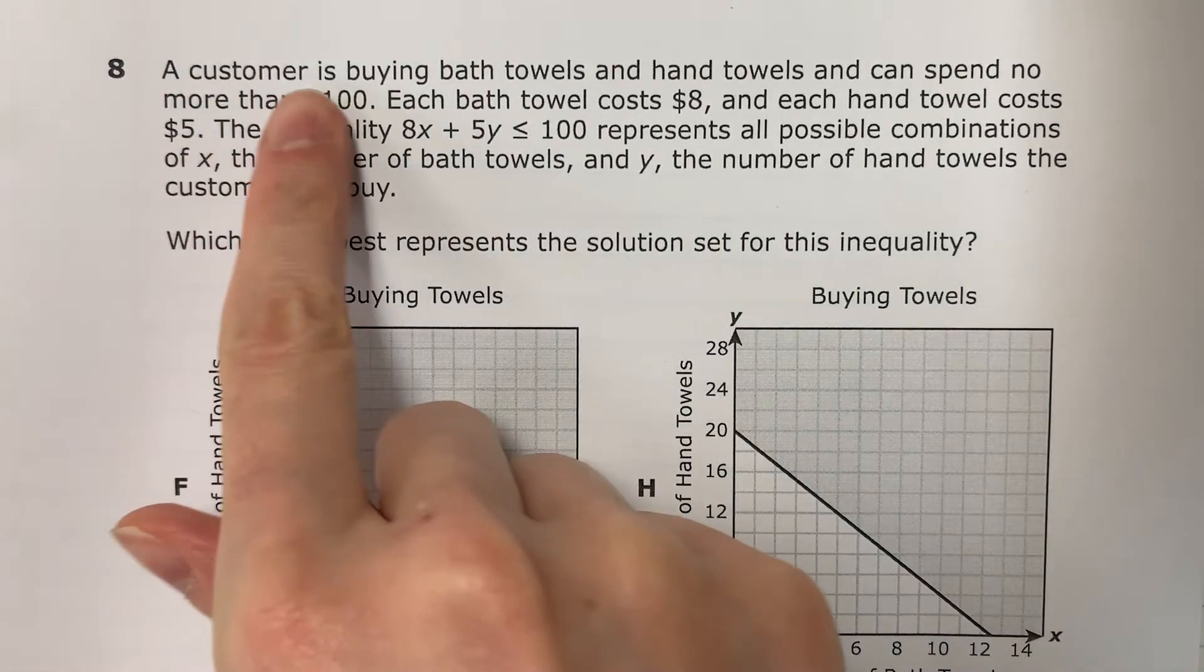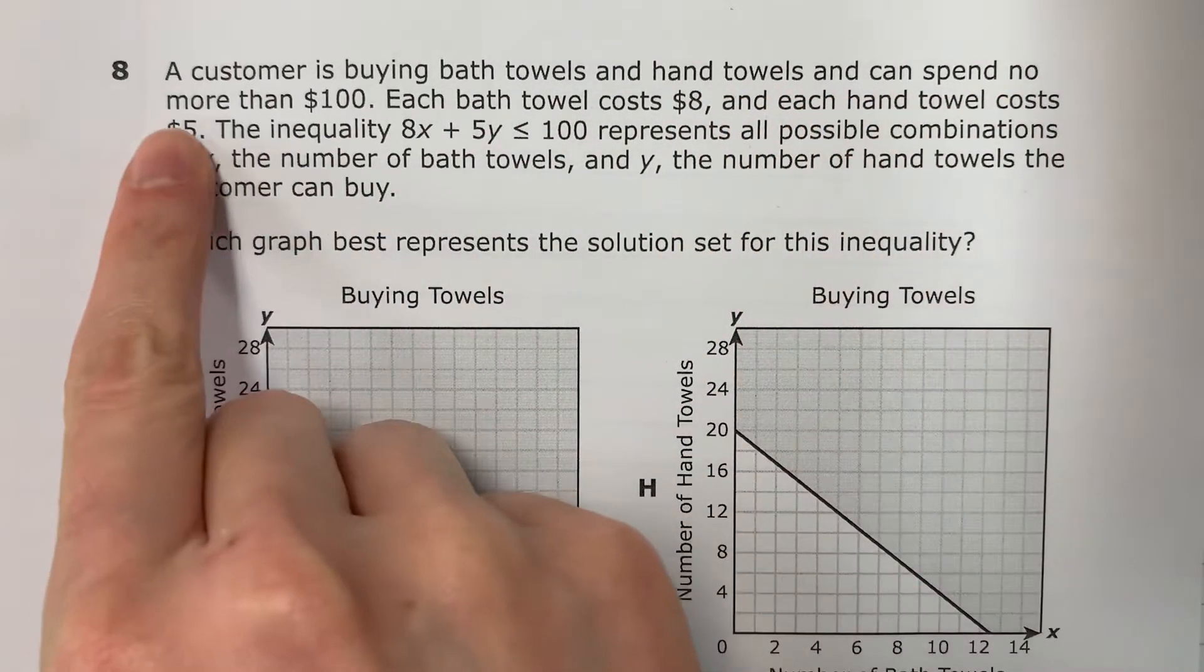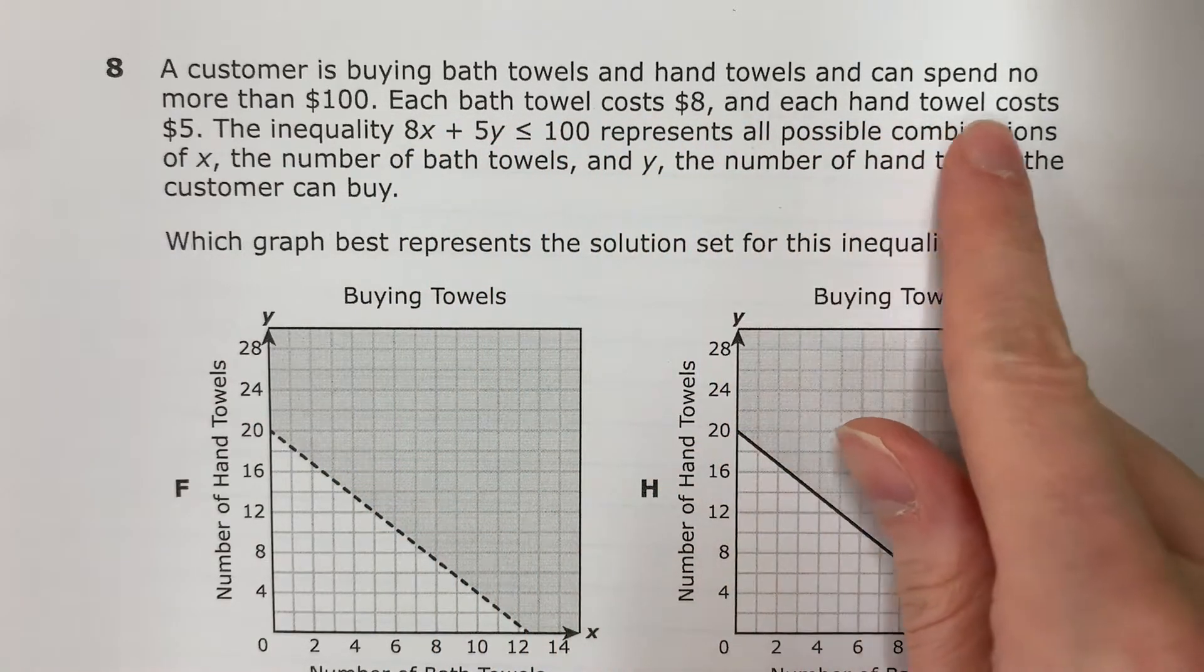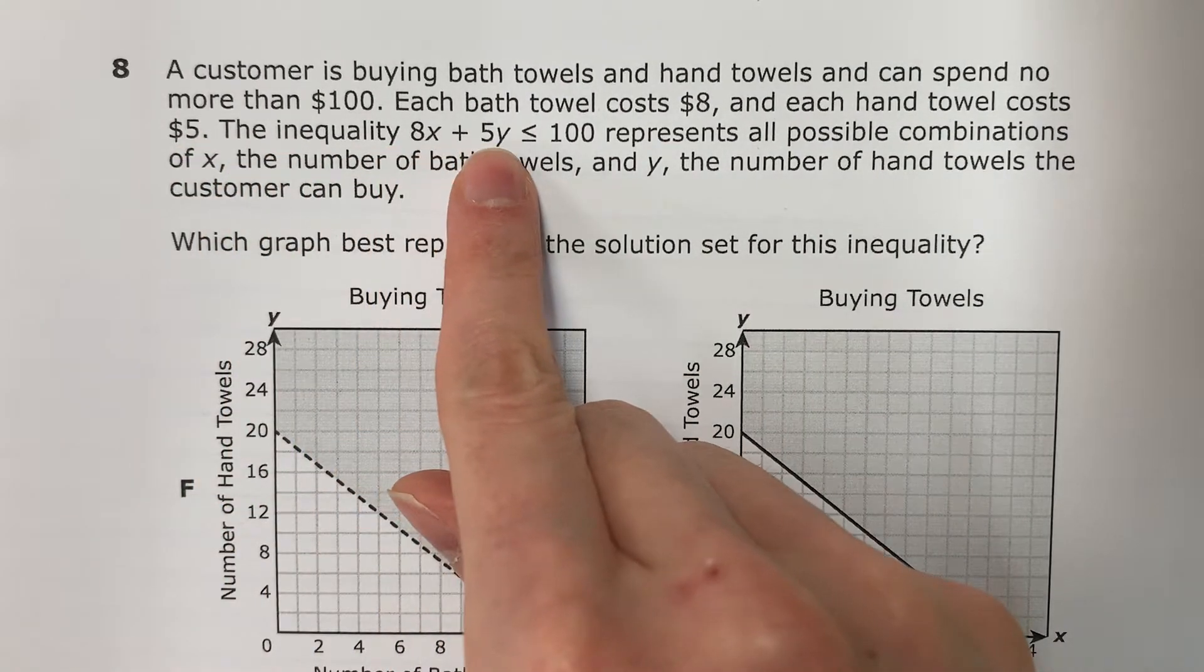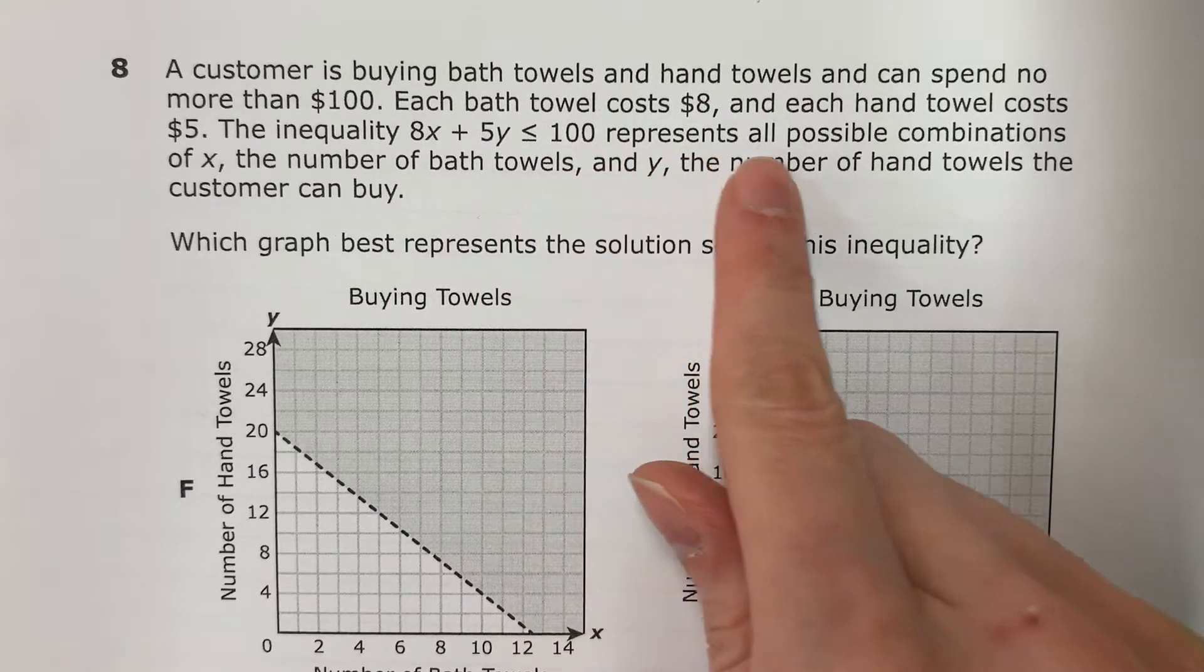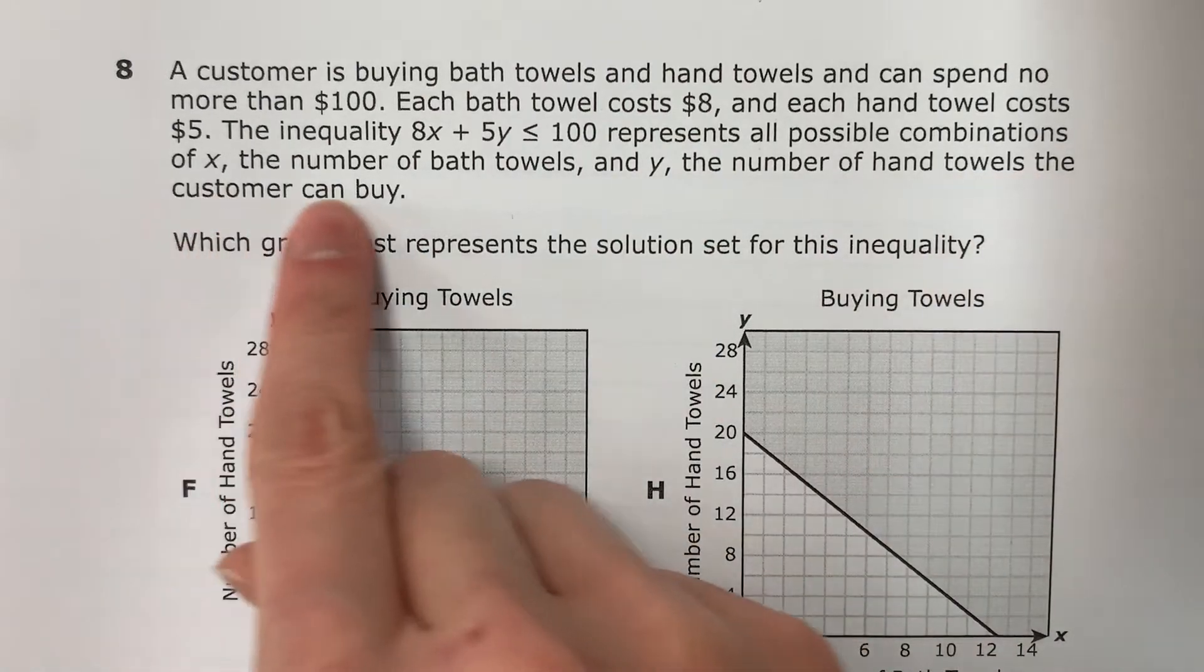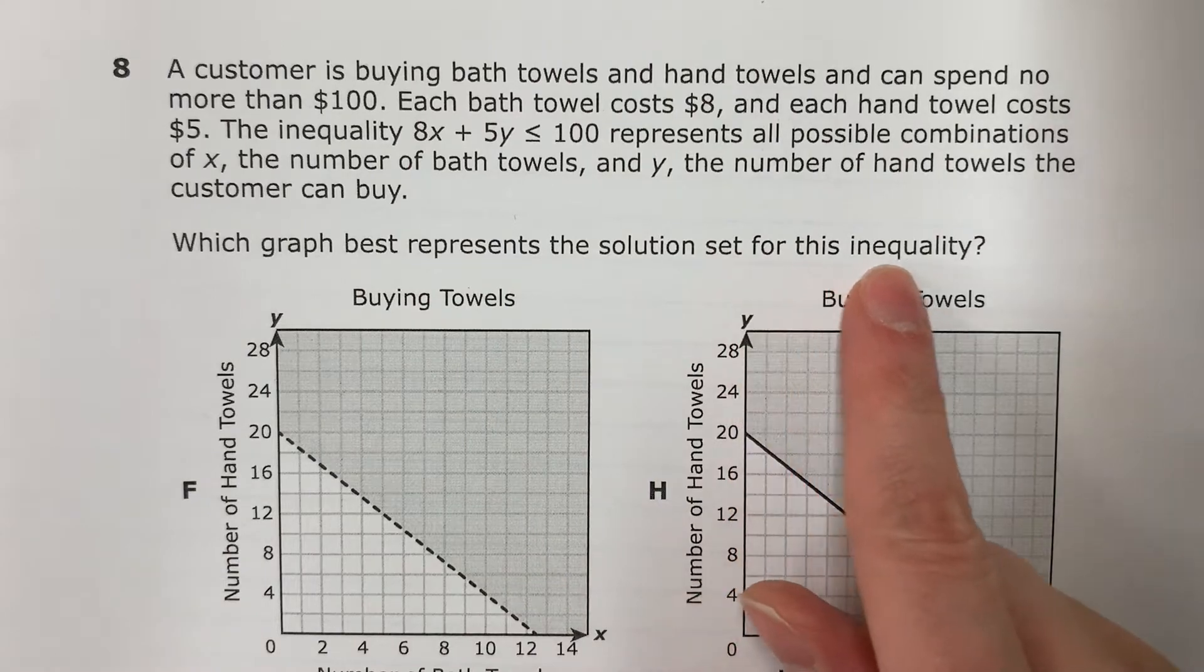Question 8. A customer is buying bath towels and hand towels and can spend no more than $100. Each bath towel costs $8 and each hand towel costs $5. The inequality 8x + 5y ≤ 100 represents all possible combinations of x, the number of bath towels, and y, the number of hand towels the customer can buy. Which graph best represents the solution set for this inequality?